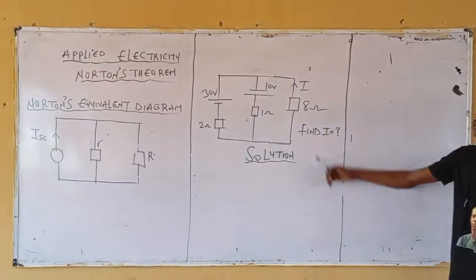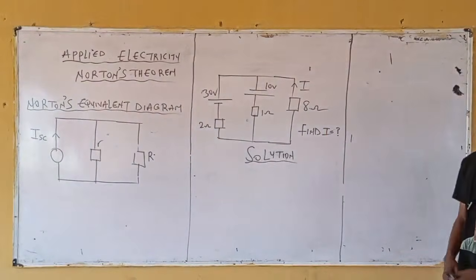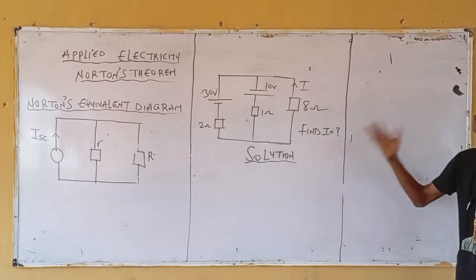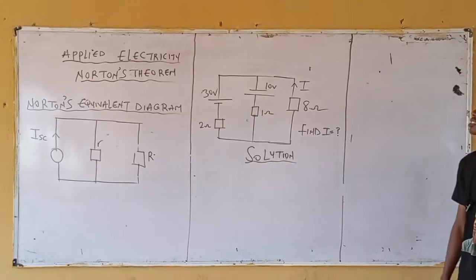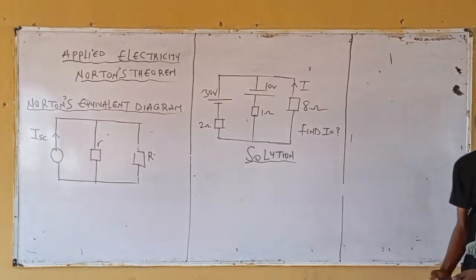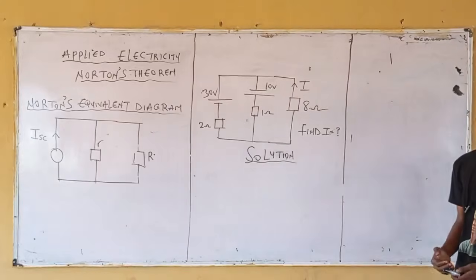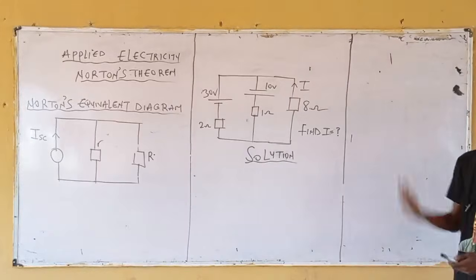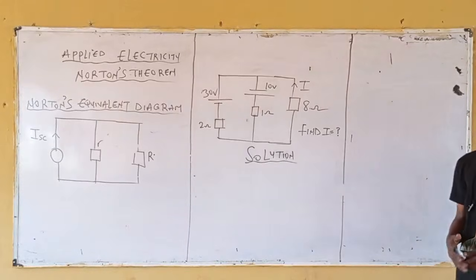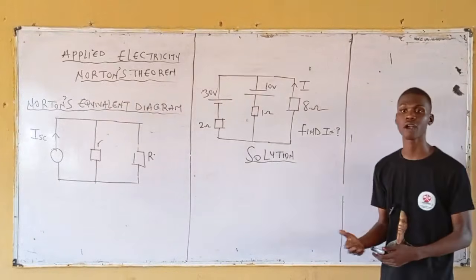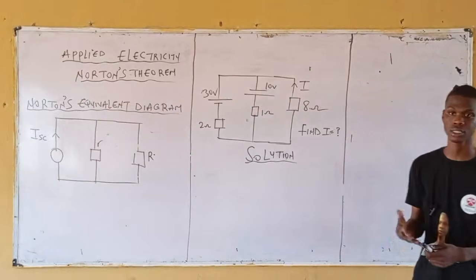From here, given a second problem, understand what you are asked to calculate. The question says: calculate what? This current — where is this I flowing? In what resistor is this I flowing? 8 ohm. What it simply means is that you are calculating the current through the 8 ohm resistor.